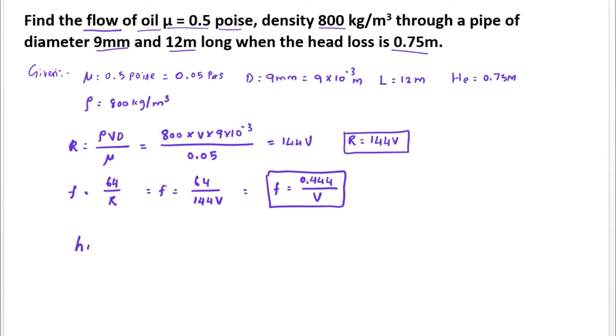Head loss HF equals the formula f into L into V square divided by 2 into G into D. The HF value is 0.75.